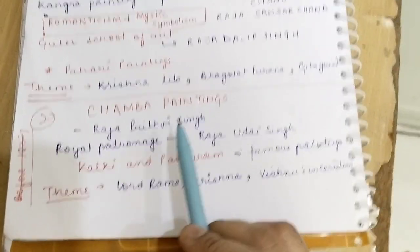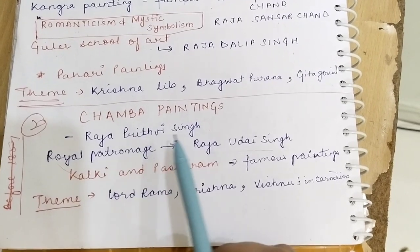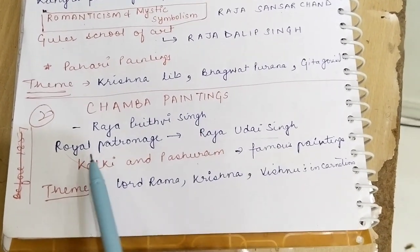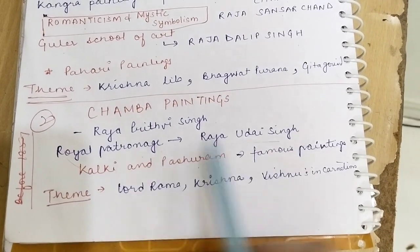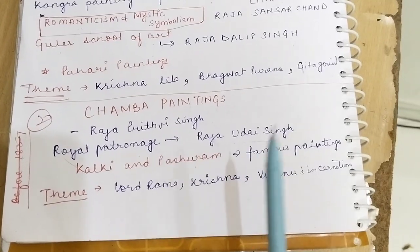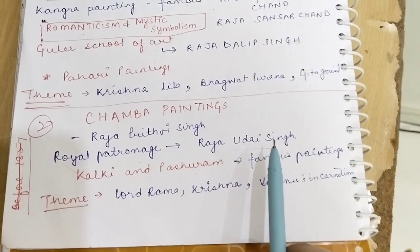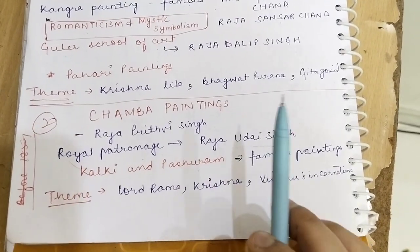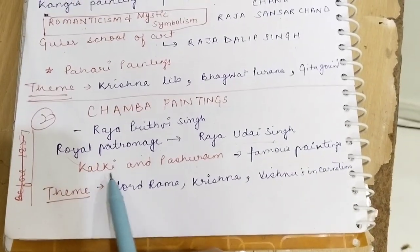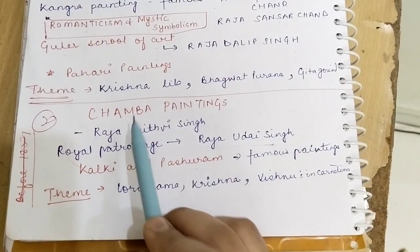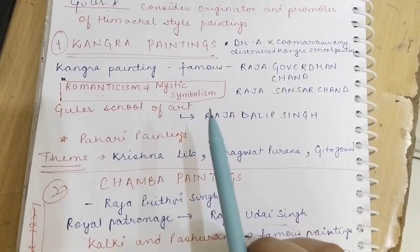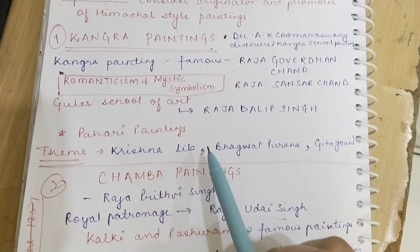Now we will talk about the painting of Raja Prithvi Singh — his painting was inaugurated. The royal patronage was during Raja Uday Singh's time. Raja Uday Singh is the one who made the color of Raja Chamba. Kalki and Bhashuram are famous paintings. In Kangra, Krishna Lila is famous.